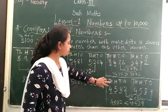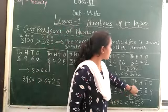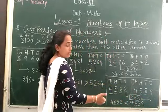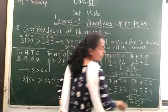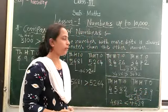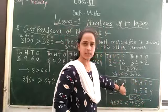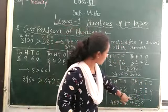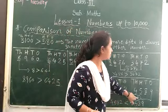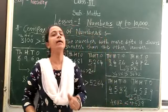Now next another example. Look at here: 4,582 and 4,589. In the 1,000s place both have 4. In the 100s place both have 5. In the 10s place both have 8. So now compare the 1s place: 2 is in the 1s place here, and 9 is in the 1s place here. Compare 2 and 9 — 9 is greater. So 4,582 is less than 4,589.